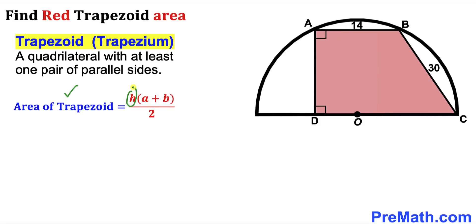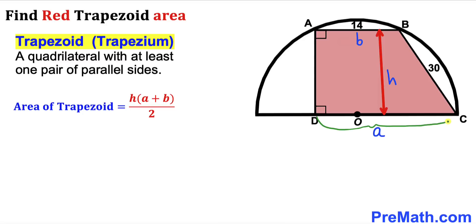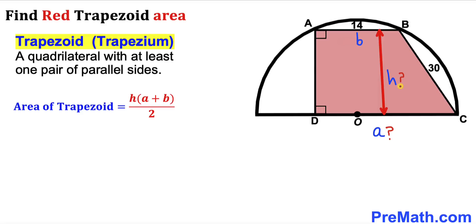Area equals height H times (A plus B) all over 2. Here, base A and base B are the two parallel sides of the trapezoid, and H is its height. We can see our base B is 14, so our task is to calculate base A and the height of this trapezoid.